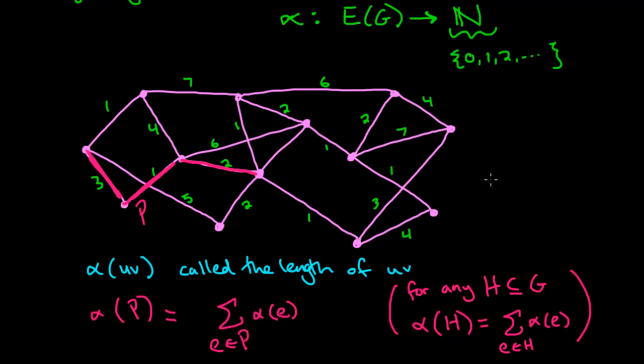So in this particular example, we see that alpha of p is equal to, we'll just add them up, we get, let's see, 6. 6 is the total weight. And this alpha of p is called the distance of the path, the distance of the path.